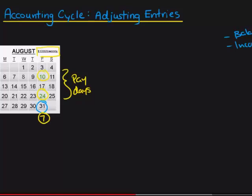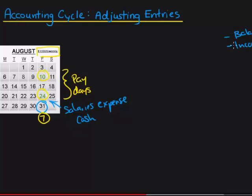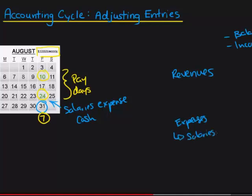Before we talk about that, the entry for actually paying the workers should look something like this: debiting salaries expense and crediting cash, to show that we are paying them for their work and incurring an expense. We are preparing an income statement because it is month's end, and an income statement does have revenues and expenses. In this example, we're talking about salaries expense.